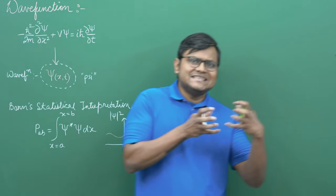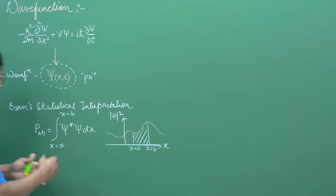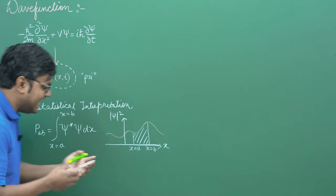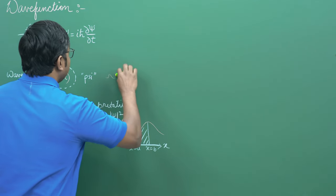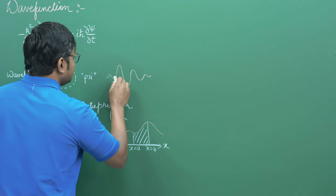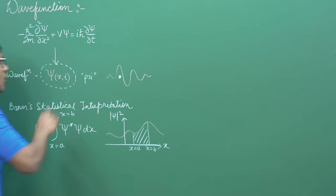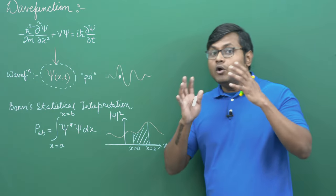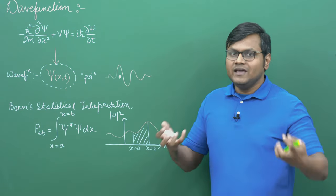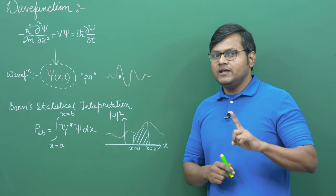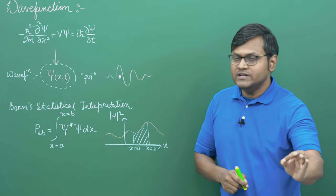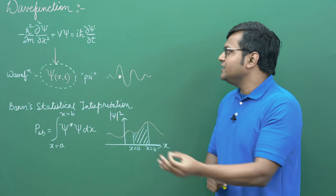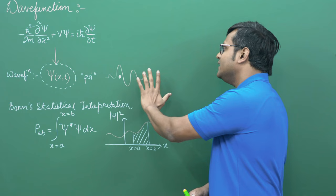The wave function itself isn't a physical quantity, but if a particle has a wave function, there is greater likelihood of finding the particle wherever the amplitude of the wave function is greater. This makes sense in the context of quantum mechanics being an indeterministic theory. The Schrödinger's equation cannot predict exactly where the particle will be in the next moment — the only thing quantum mechanics provides is an idea of where the particle is more likely to be.